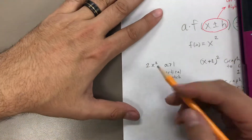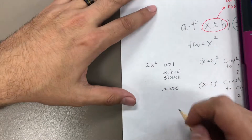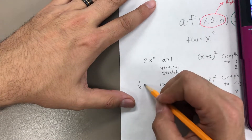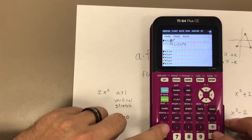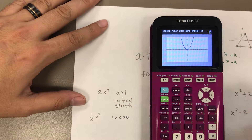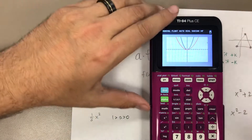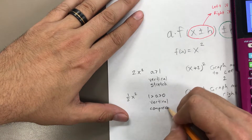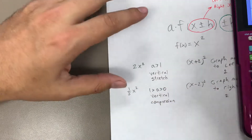Now let's see what happens when A is between 0 and 1 — not 0, because that would eliminate everything. Let's pick a number between 0 and 1, like 1/3. I'll put 1/3 in front of x squared and see what happens. There's my original graph x squared, and here's (1/3)x squared. It makes the graph go out wider in the x direction — stretched out. We call that a vertical compression.